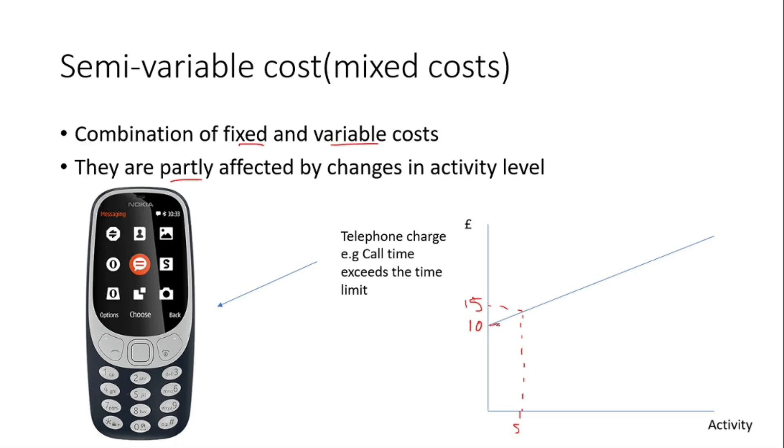So you can see that this part here is the fixed cost. But the extra five minutes will give us a cost of five pounds extra, which will be the variable cost. So you can see that it will add up to a semi-variable cost because we have both variable costs and fixed costs here.